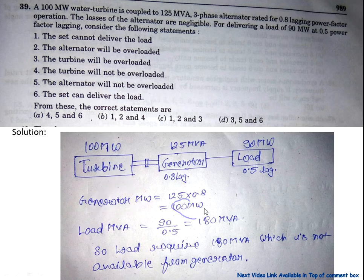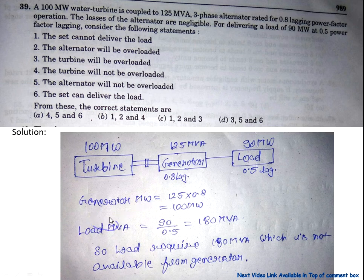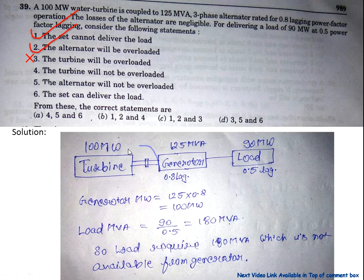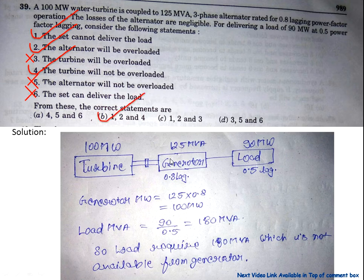The generator active power is 100 MW, which can be fulfilled by the turbine, so the turbine is not overloaded. However, the load requires 180 MVA but the generator is only 125 MVA, so the generator is overloaded and the whole set cannot deliver the power. Statement 1 (set cannot deliver power) and statement 2 (alternator will be overloaded) are correct. The turbine will not be overloaded. So answer B — statements 1, 2, and 4 — is correct.